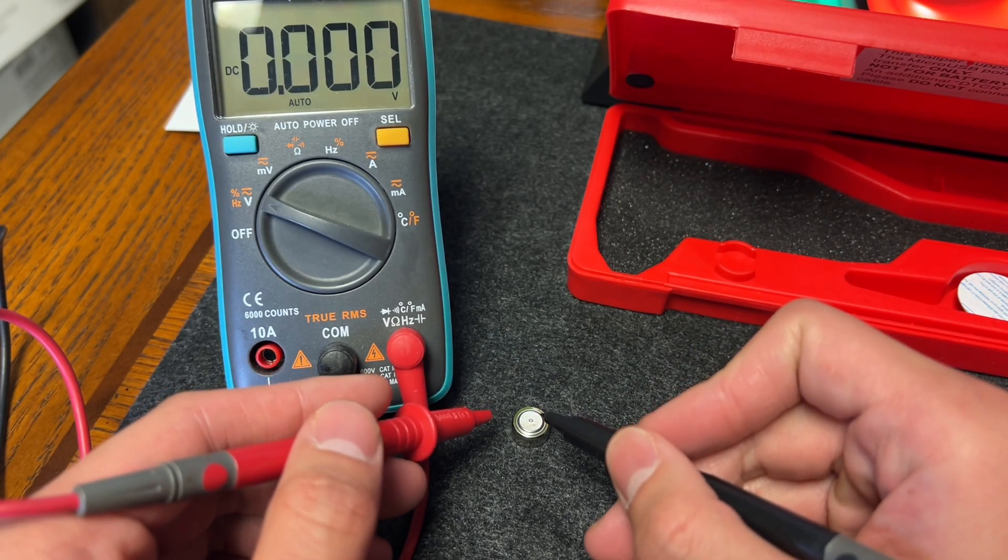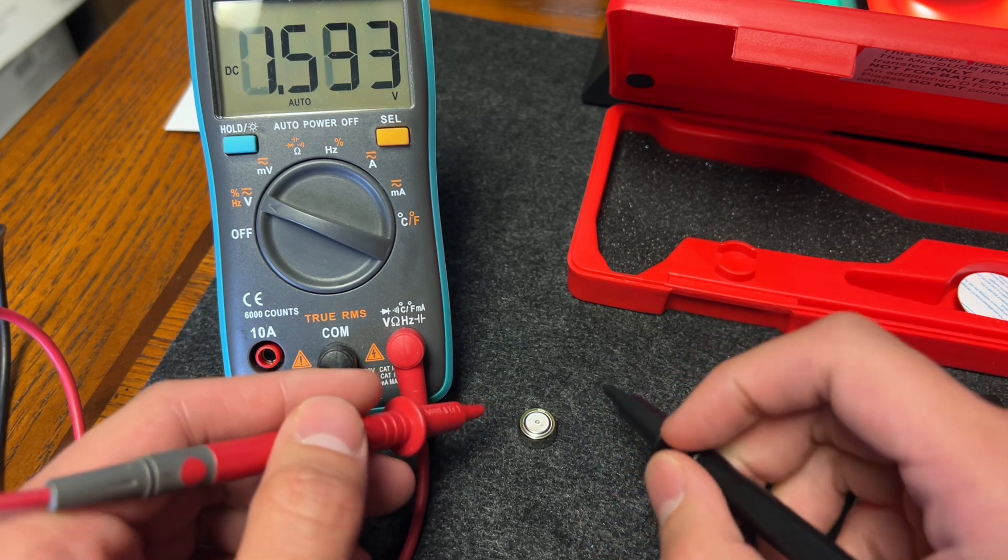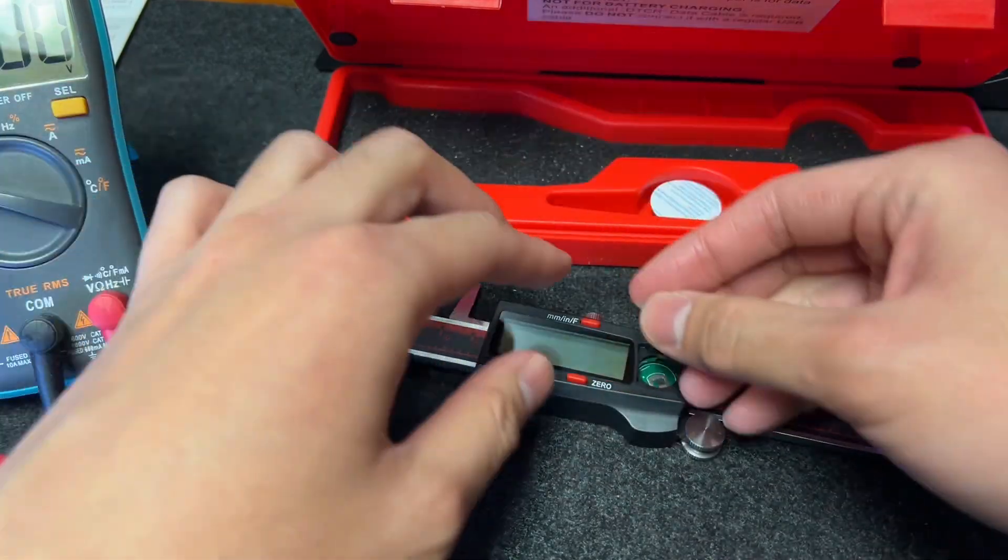First, let's check the new battery. Okay, it's 1.558. Put the new battery in the caliper.